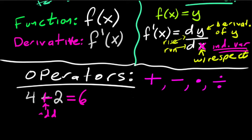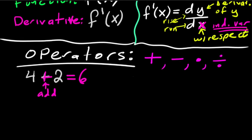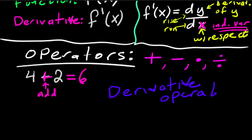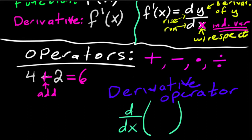In the same way, you have the derivative operator. The derivative operator looks like d over dx with a set of parentheses. For example, d/dx of x squared — this is asking you to find the derivative of x squared.